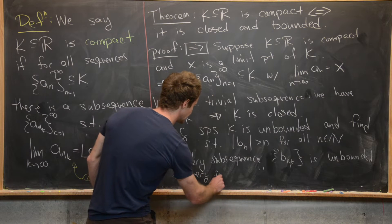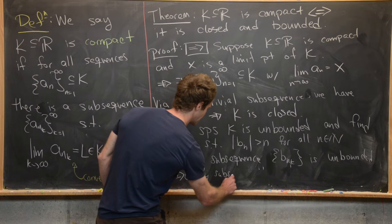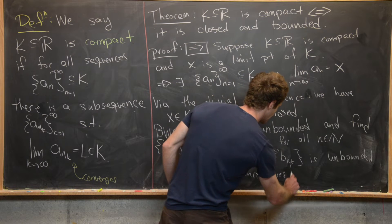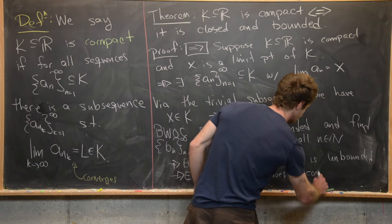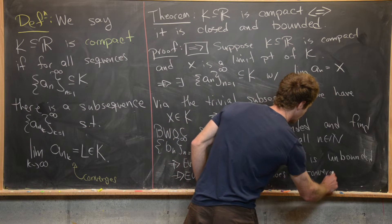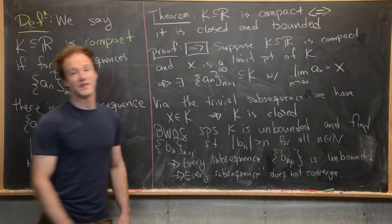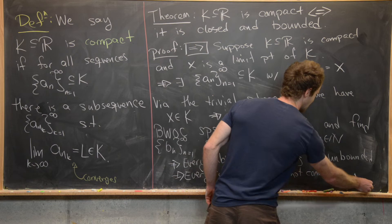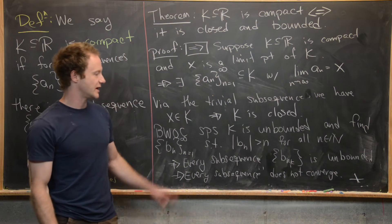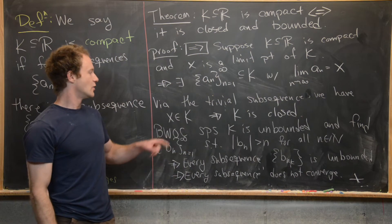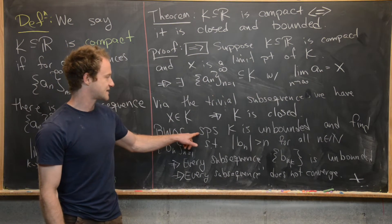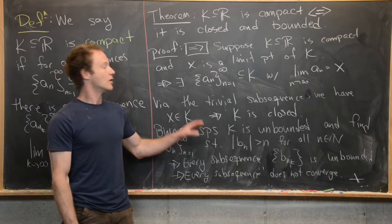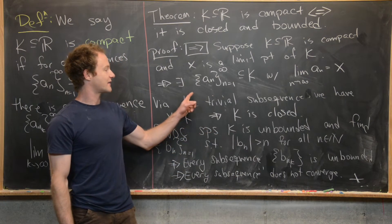An unbounded sequence cannot converge, so we know that every subsequence does not converge. But that tells us K is not compact, and that is our contradiction — we contradicted our supposition that K was unbounded. So we've shown K is closed and bounded, finishing the forward direction.